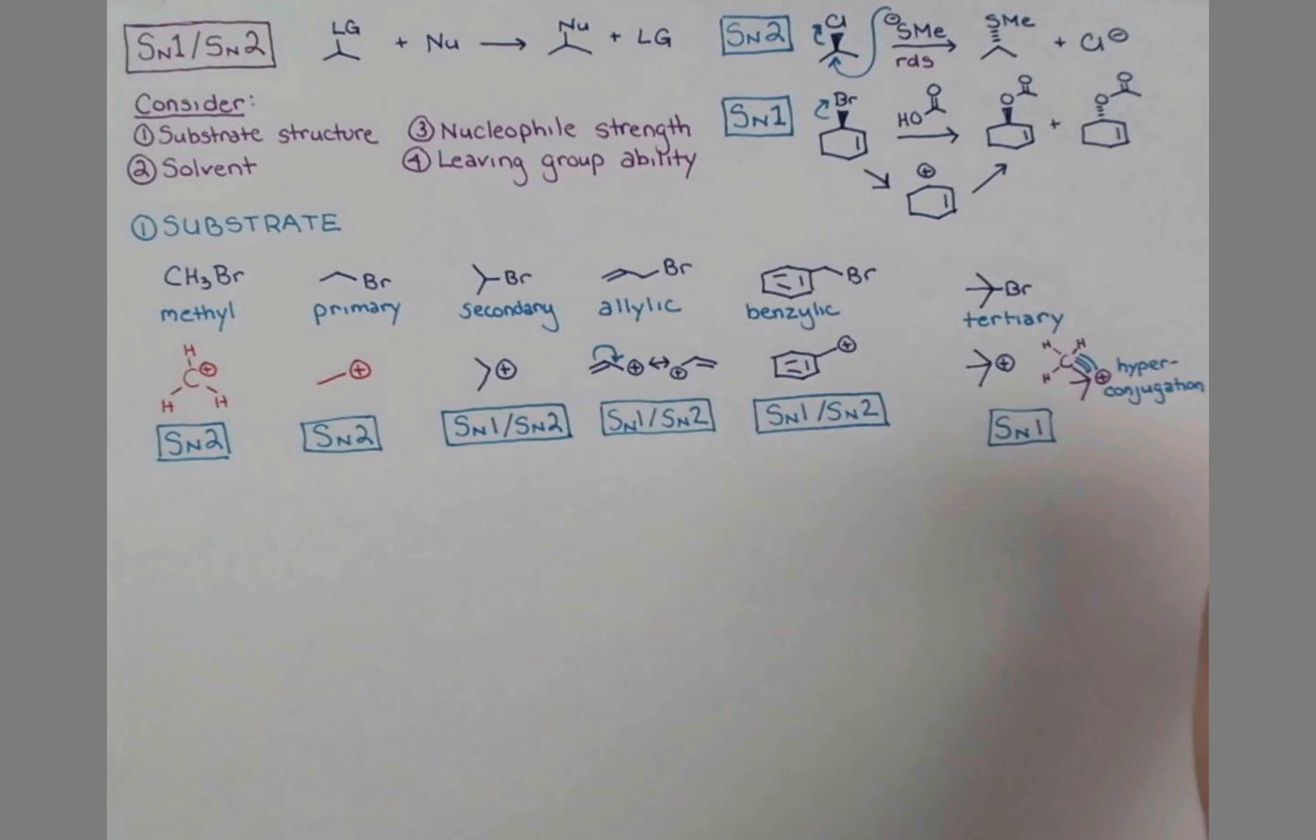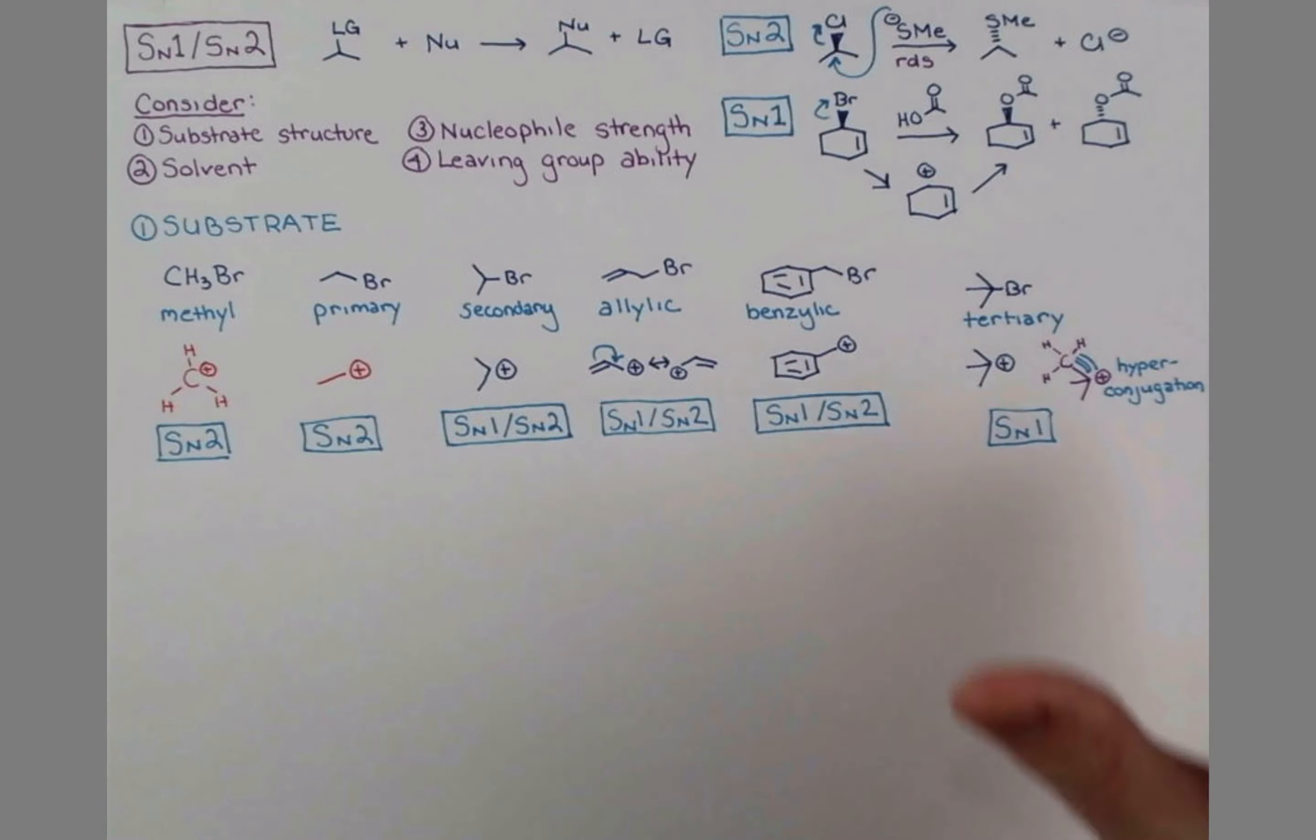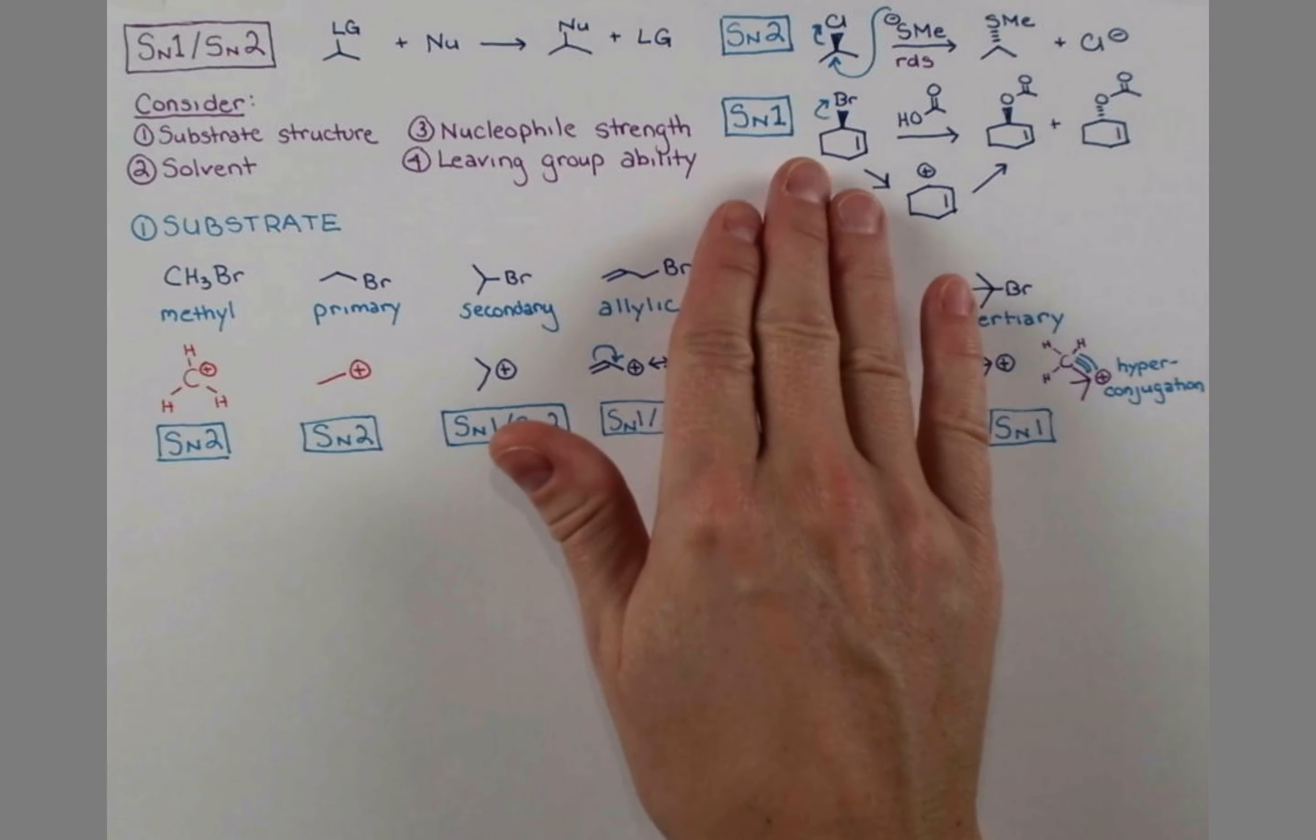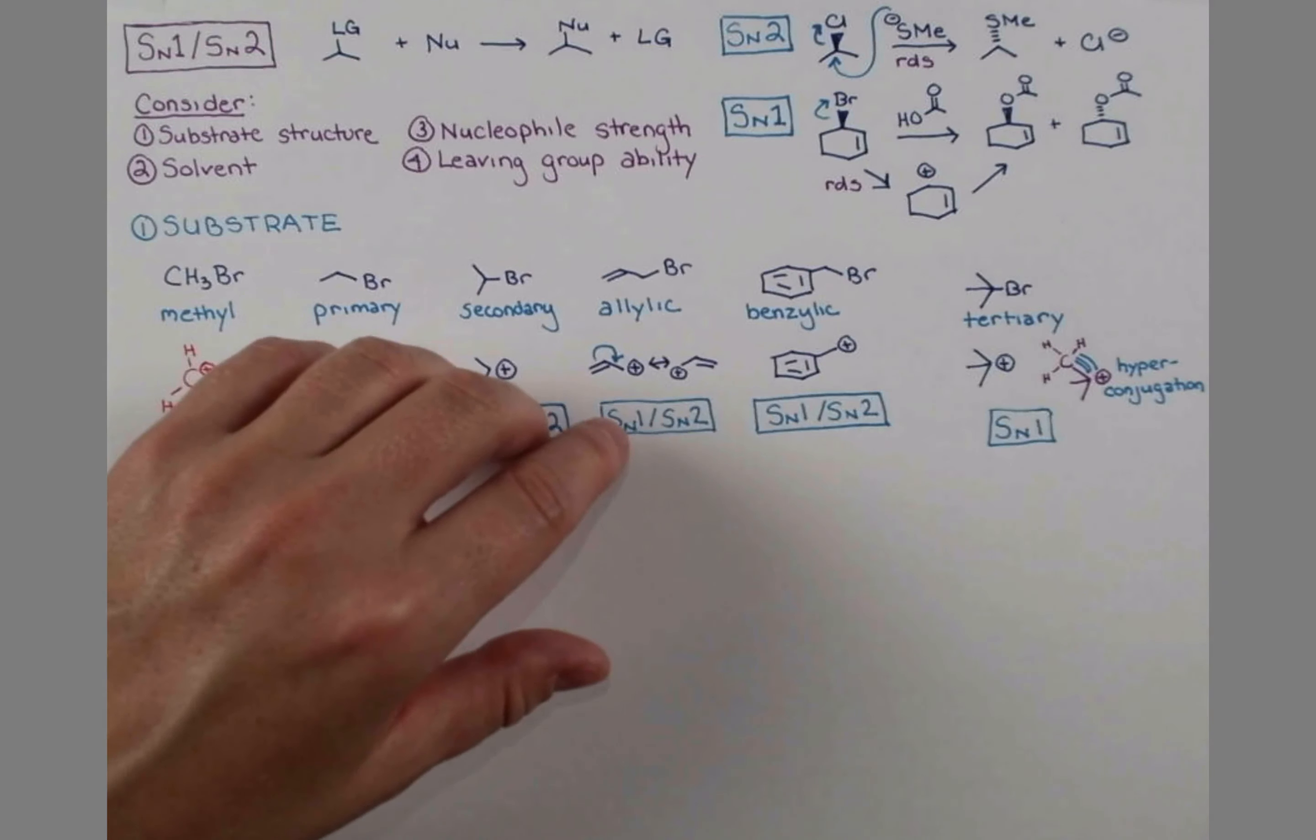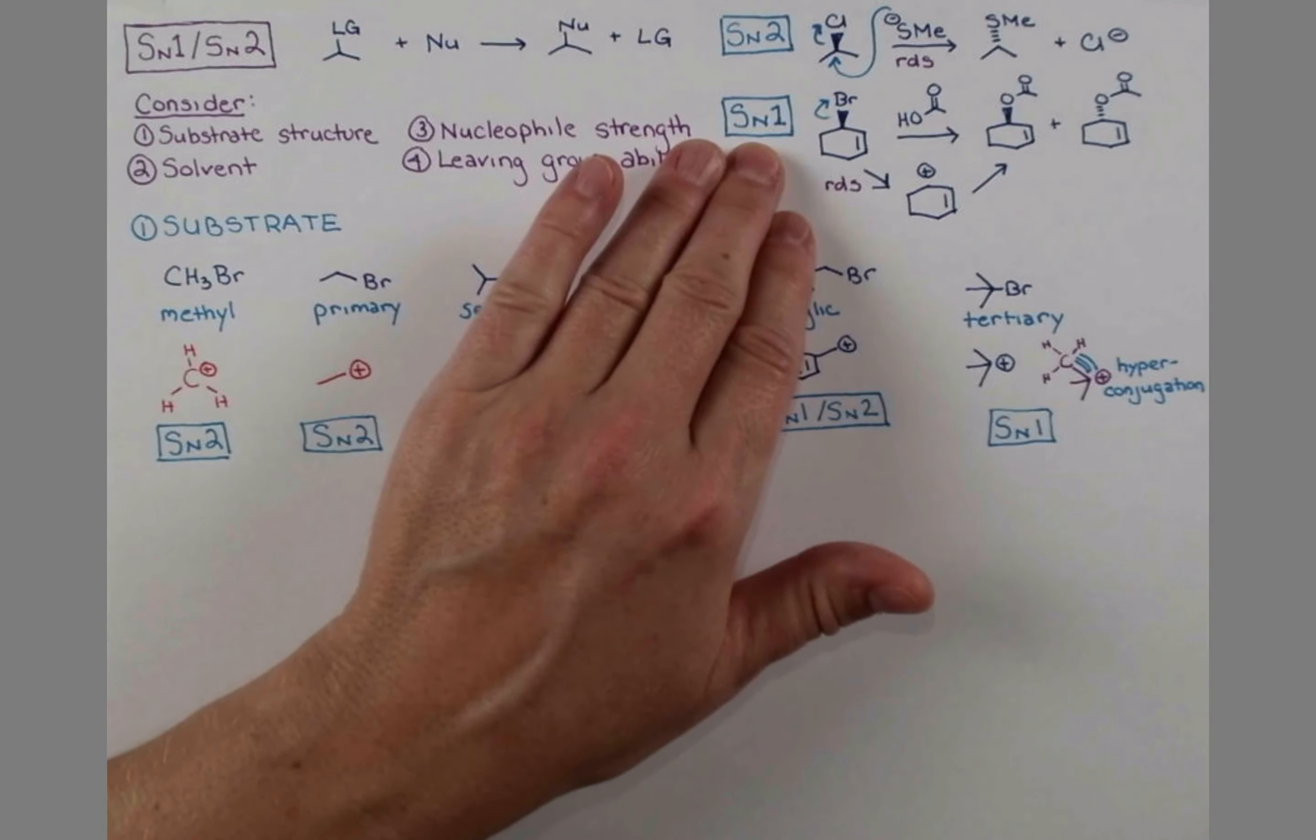In the SN1 reaction, the rate determining step—this sits around until the leaving group leaves. And then this step is going to be really fast. We have a positively charged thing that's going to be attracted to electrons and they come together really quick here. But this thing just sits around until this leaves. And so this first step is our slow step or our rate determining step. So in an SN1 reaction, the rate only is determined by this compound and how long it sits around until it gives up its leaving group. So substitution, nucleophilic, unimolecular.